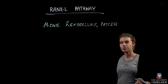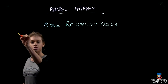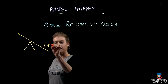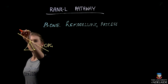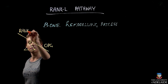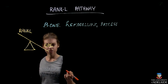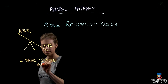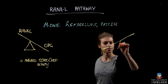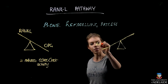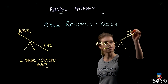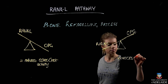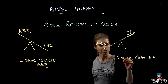Summarising the bone remodelling process: if there is more OPG being expressed by osteoblasts and less RANKL, this reduces osteoclast activity. However, if there is more RANKL and less OPG, this increases osteoclast activity, which in turn leads to bone resorption.